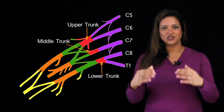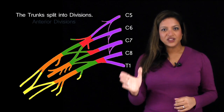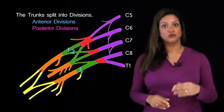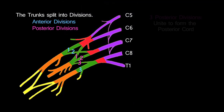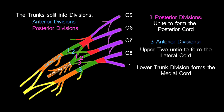As soon as the trunks are formed — upper, middle and lower — each of them split, giving anterior divisions and posterior divisions. So there are 6: 3 anterior and 3 posterior divisions. All of the posterior divisions unite to form the posterior cord. The upper two anterior divisions unite to form the lateral cord, and the anterior division of the lower trunk carries on to form the medial cord.